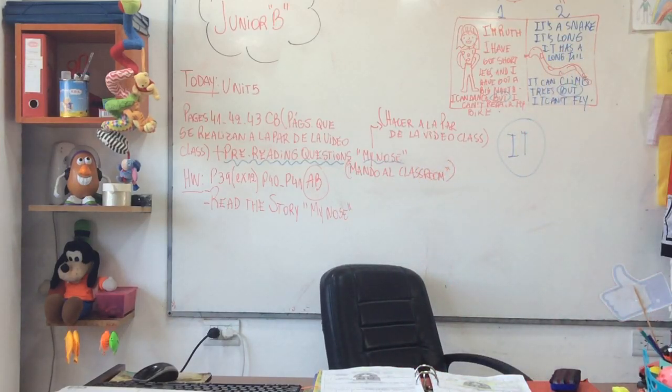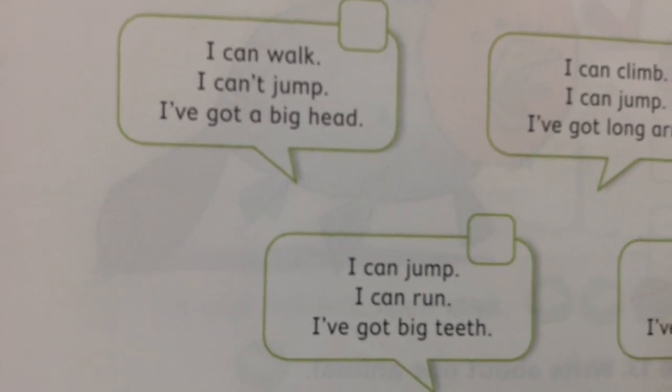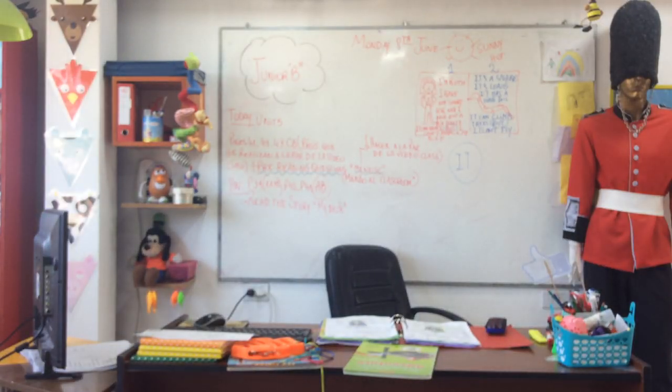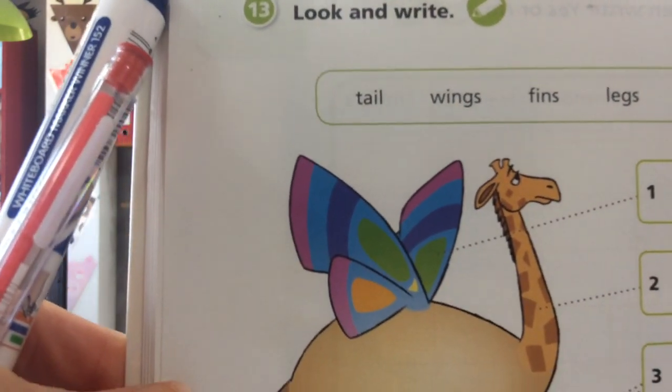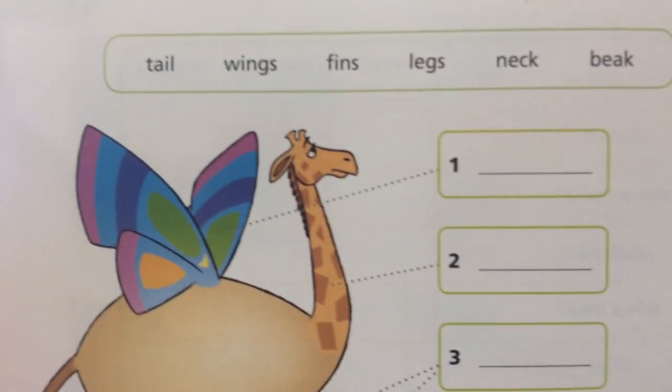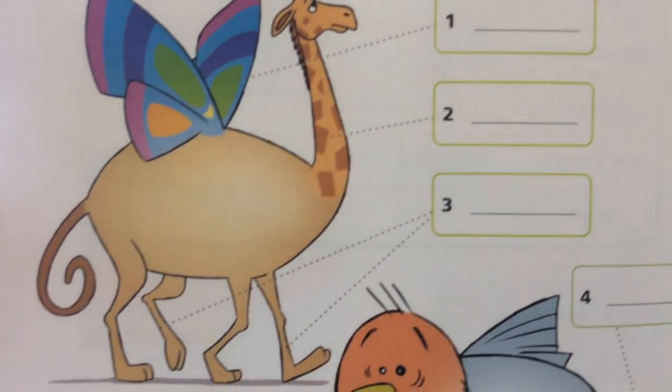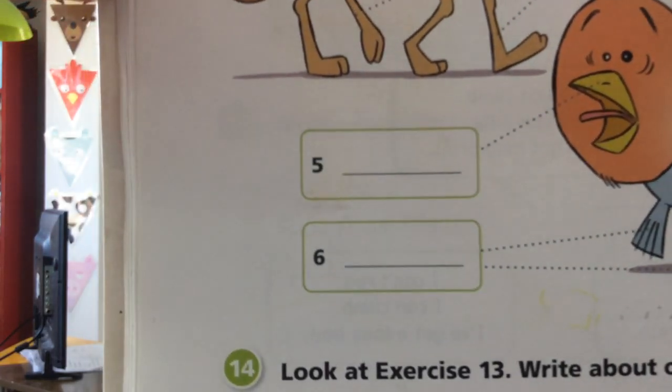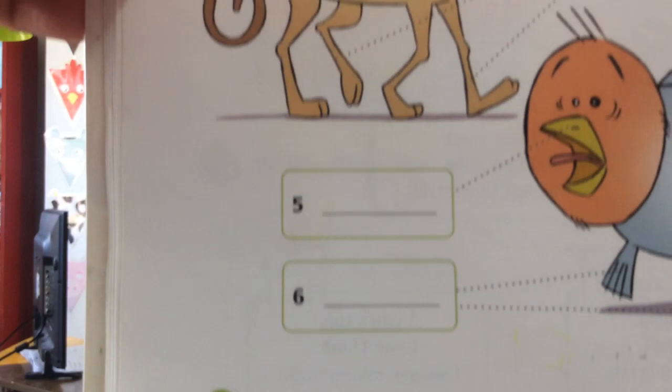So let's go to page 39, solo el ejercicio 12, only exercise 12 — read and say the number. You have the animals here and you have the description. I can't walk, I can't jump, I've got a big head — which animal is it? Page 40: look and write — wings, legs, neck, beak, tail — tenés todas las partecitas.